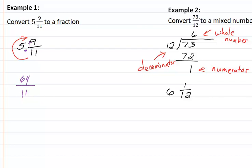If 73 and 12 had common factors, you would remove them first before you divide.